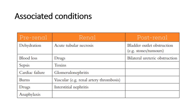Oliguria is associated with causes that can be divided into pre-renal, renal, and post-renal causes. Pre-renal causes are dehydration, blood loss, sepsis, cardiac failure, burns, drugs, and anaphylaxis.